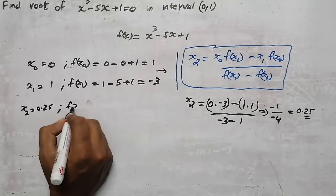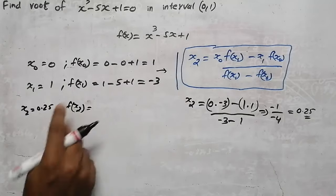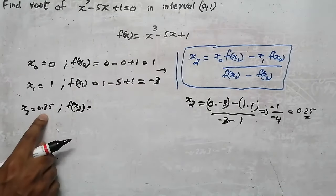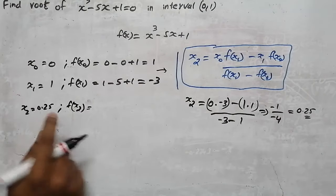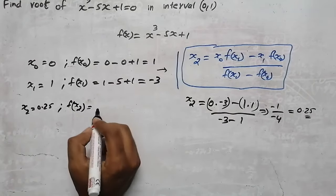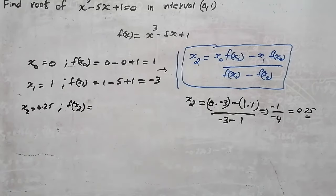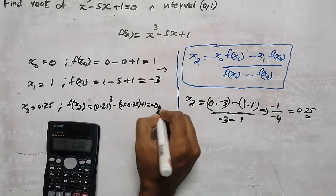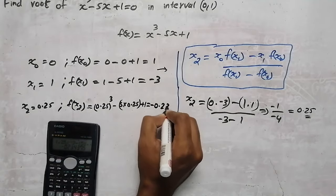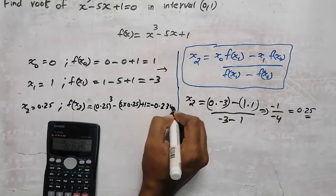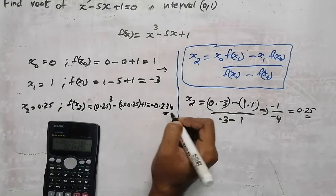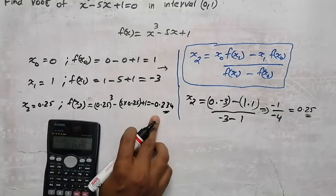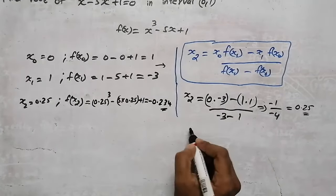Now we need to find f(x₂). Wherever there is x, substitute 0.25. Using a calculator, you get f(x₂) equal to minus 0.234.